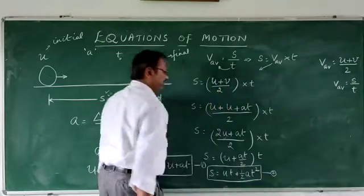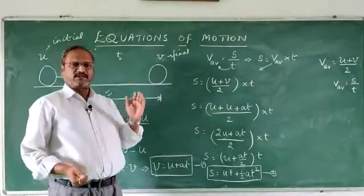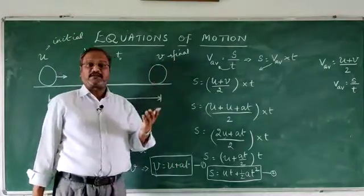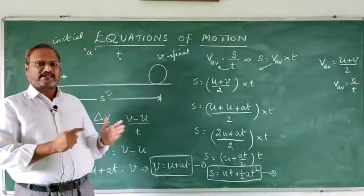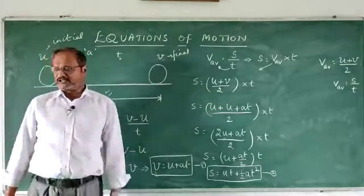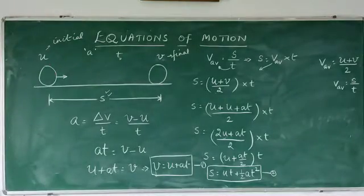Second equation of motion. Be clear about it. Now, we start with the same formula. V average is displacement or distance upon time. Total distance traveled upon total time taken. And that I have substituted for average velocity U plus V upon 2. And then I have moved ahead with the value.